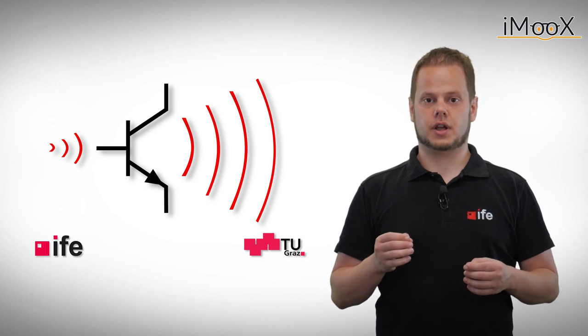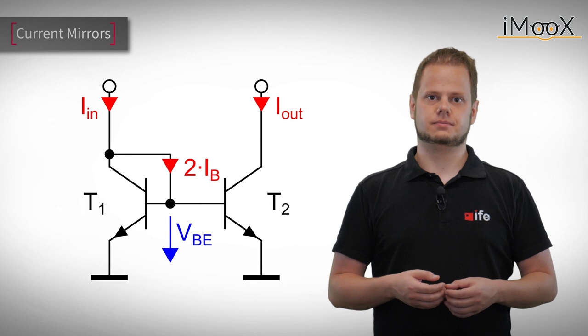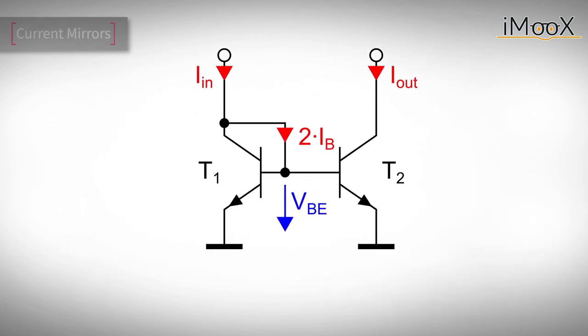Fortunately, there is a small circuit which can solve our problem, the current mirror. The current mirror consists of two transistors, with their base terminals connected to each other. One of the transistors has its collector wired to the base, transforming it into something like a diode.